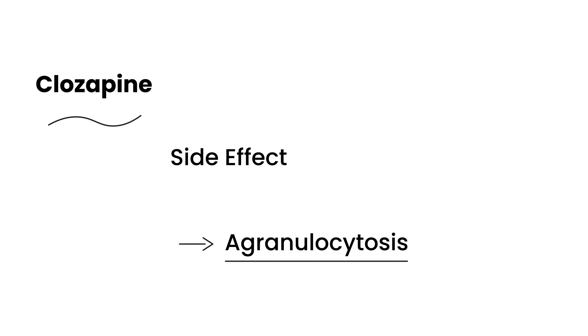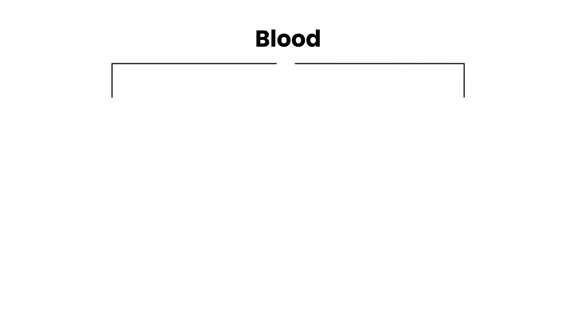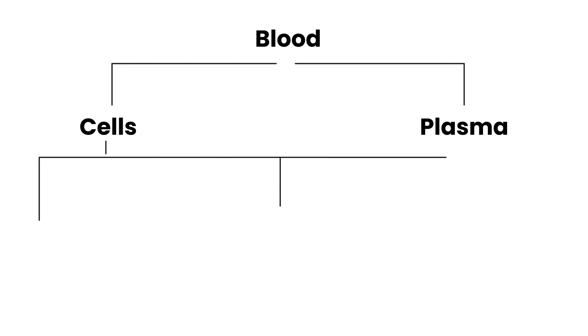Before I get into agranulocytosis, I think it's important to explain what that actually means, and that's best explained by breaking down the components of blood, because agranulocytosis is referring to a certain specific blood cell. When you break down blood, you have the formed elements, which are the cells, and then you have the plasma — the water, electrolytes, proteins, things like that. There are three types of cells: red blood cells, white blood cells, and platelets.